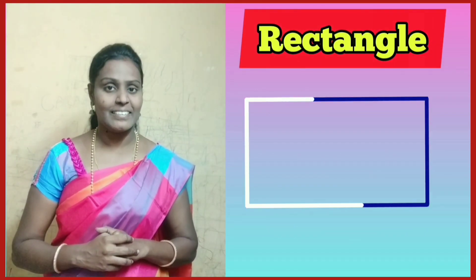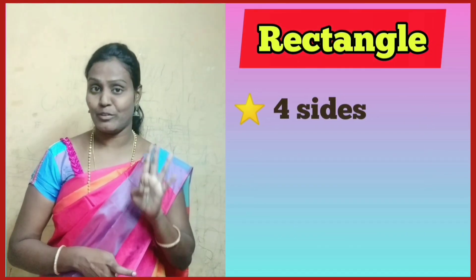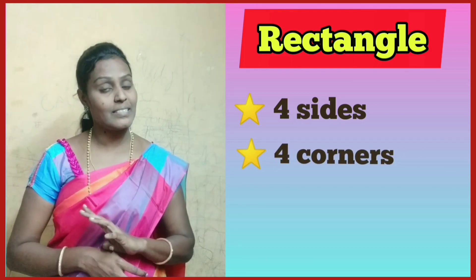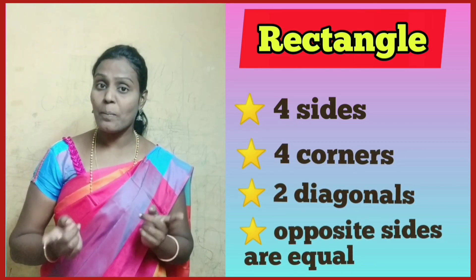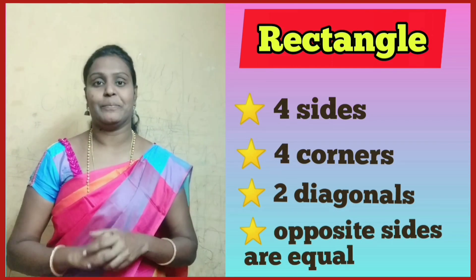Rectangle has 4 sides, 4 corners and 2 diagonals. Its opposite sides are equal.